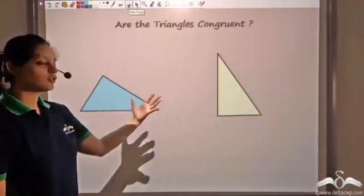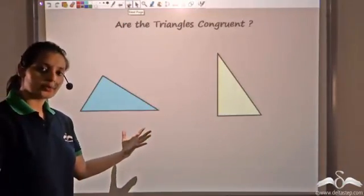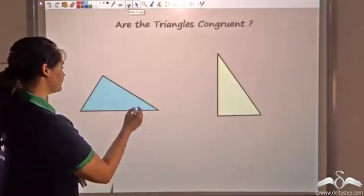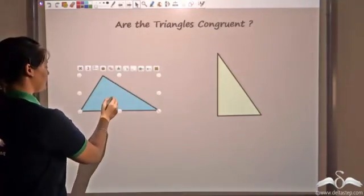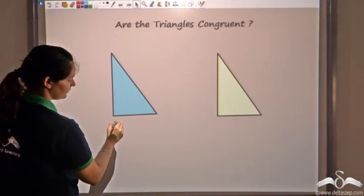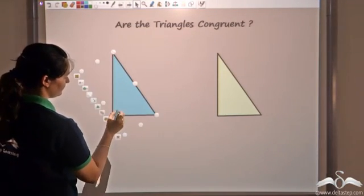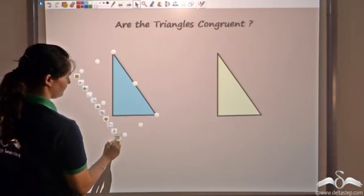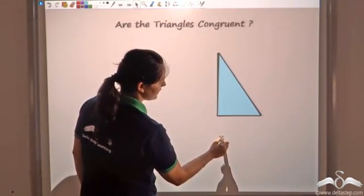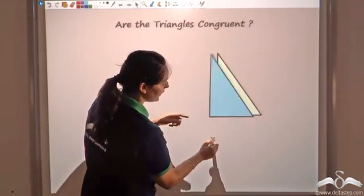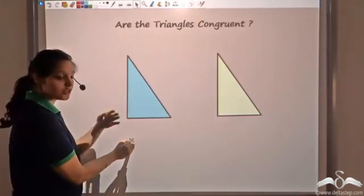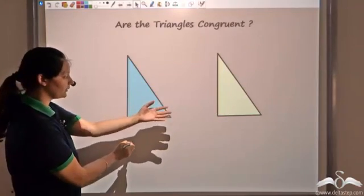Can I say that these two triangles are congruent? When would they be congruent? If they can perfectly overlap. Let me try and see if I can perfectly overlap one over the other. You see that the blue one perfectly overlaps the yellow triangle, and hence I can say that these two triangles are congruent.